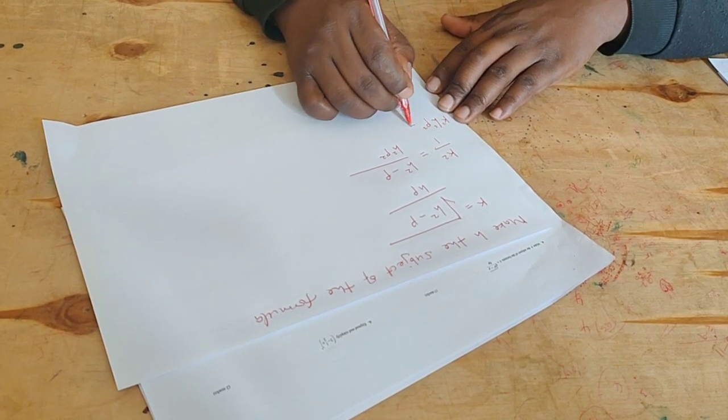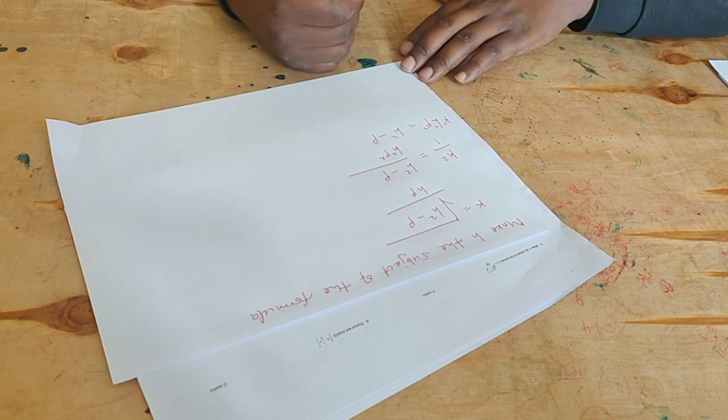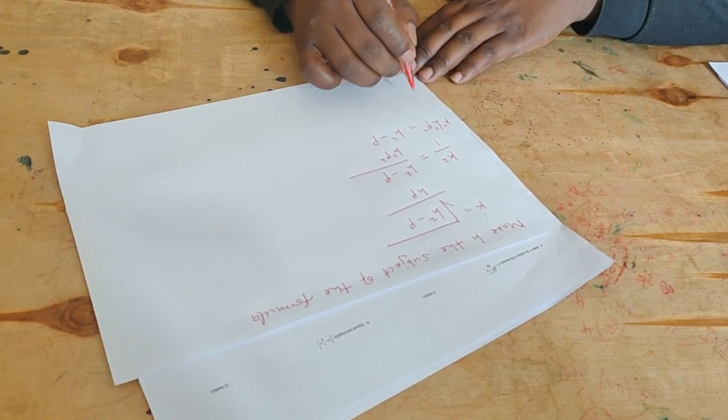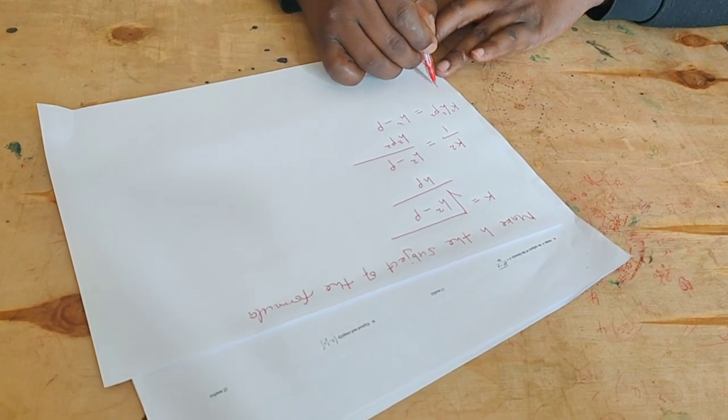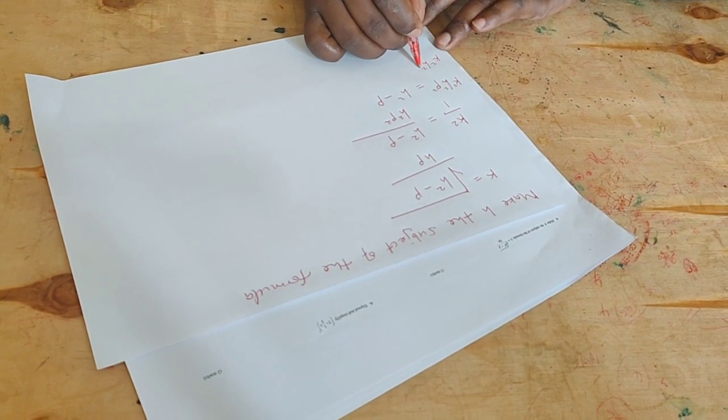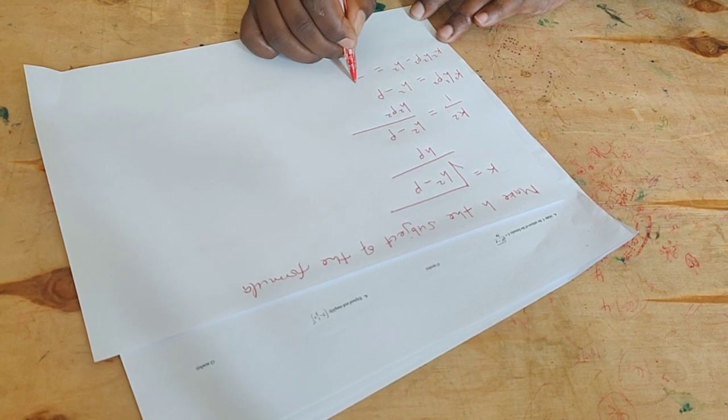We are interested in h, so we shall say k squared h squared p squared minus h squared equals negative p.